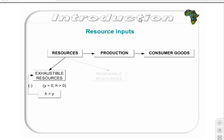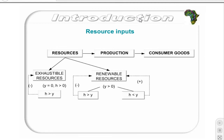Renewable resources are able to regenerate themselves over time. Examples of renewable resources include timber, fish, agricultural crops, and livestock. Renewable resources have a positive growth rate. Thus, the harvest rate can be either greater than or less than the growth rate. When H is less than Y, the resource is able to grow and increase over time. However, a harvest rate that is larger than the growth rate would result in a declining stock over time.